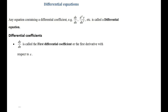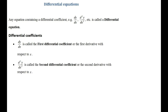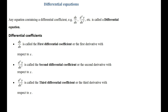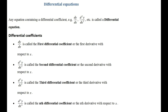By differential coefficient, dy over dx is called the first differential coefficient or the first derivative with respect to x. d²y over dx² is called the second differential coefficient or the second derivative with respect to x. d³y over dx³ is the third differential coefficient or the third derivative with respect to x. And we could go on: dⁿy over dxⁿ is the nth differential coefficient or the nth derivative with respect to x.